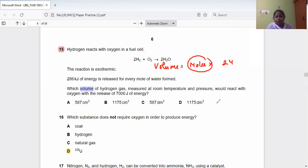What is given? 7000 joules. So 7000 joules divided by 286 kilojoules - that means you have to convert into joules.